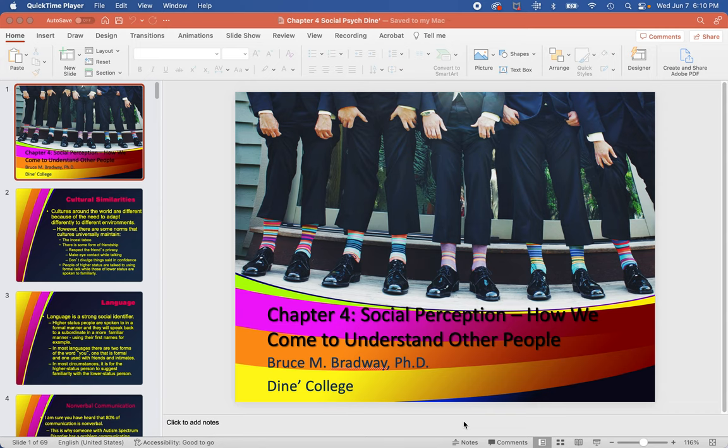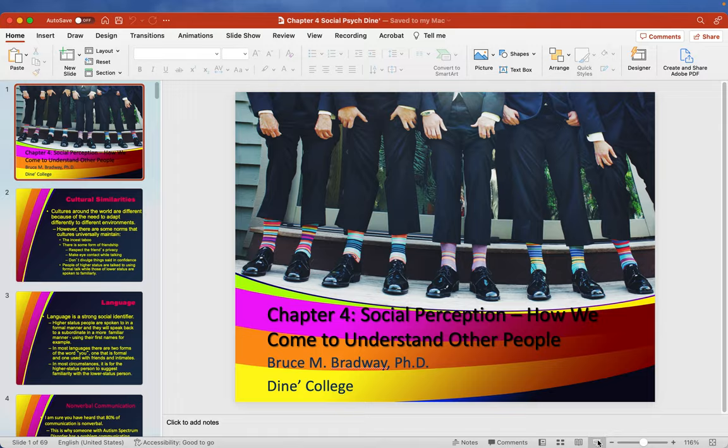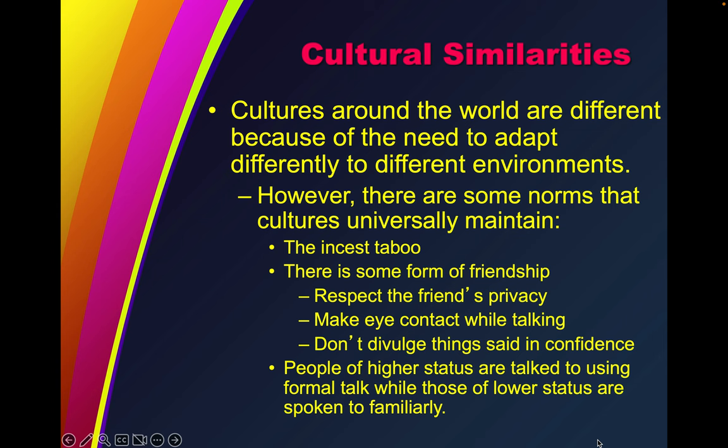We're talking about social perceptions and how we come to understand other people. Cultures around the world are different because of the need to adapt differently to different environments. However, there are some norms that cultures universally maintain.